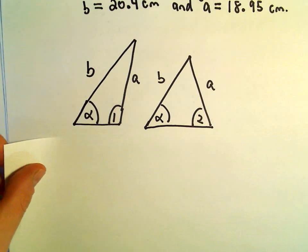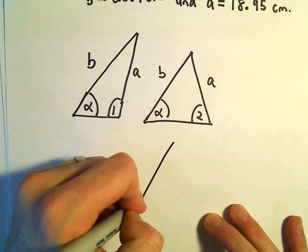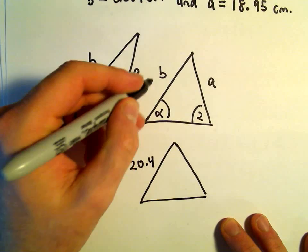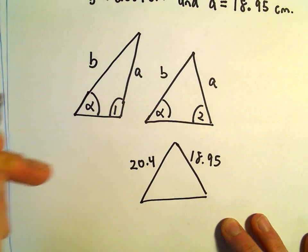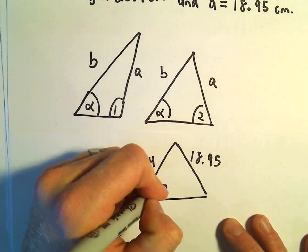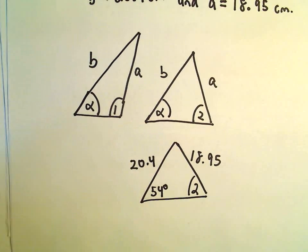So what I'm going to do is I'm going to work on the second triangle. I'm going to use the law of sines. We know that B is 20.4. We know that A has value 18.95. The angle alpha is going to be 54 degrees. And we don't know the measure of angle 2.